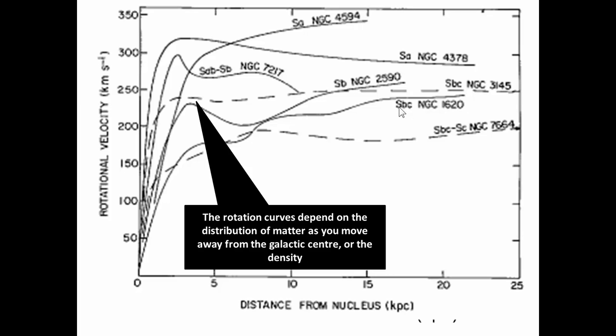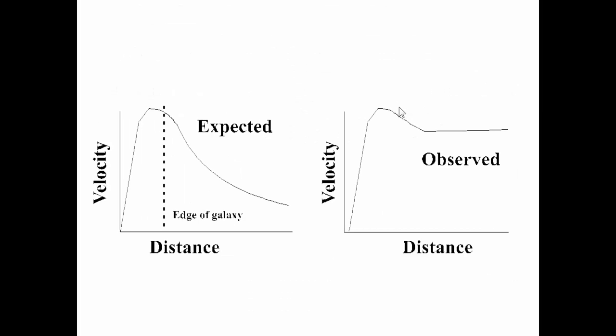So these rotation curves depend on the distribution of this dark matter as you move away from the galactic center. Or another way of saying it depends on the density. This rotation curve is one that you should be able to recall and be able to explain why it has this shape. So this is what is expected and this is what is observed. This is a simplification of that. Of course it depends on galaxy to galaxy, how the mass is distributed, how it would look here. But they more or less say the same story.